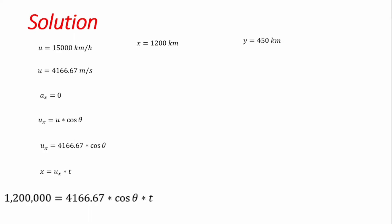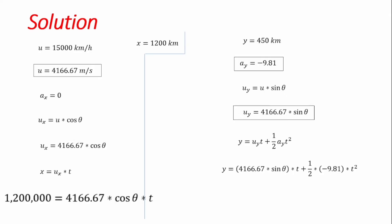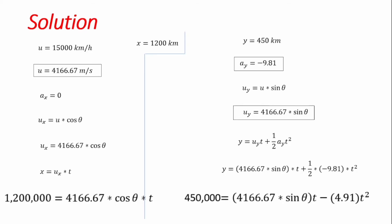We're trying to solve the first part: determine angle theta. For the vertical (Y) direction, acceleration is −9.81 m/s² and initial vertical velocity Uᵧ = U sinθ = 4,166.67 sinθ m/s. Using the vertical displacement equation y = Uᵧt + ½aᵧt², and substituting all known values with vertical displacement of 450 km, we get Equation 2.